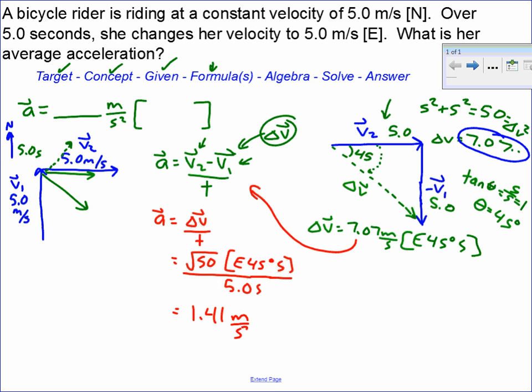When we divide that out, we get 1.41 meters per second squared, east 45 degrees south. And that is our acceleration.